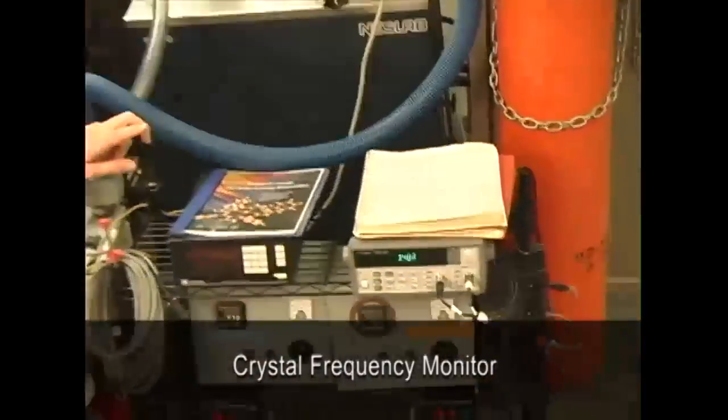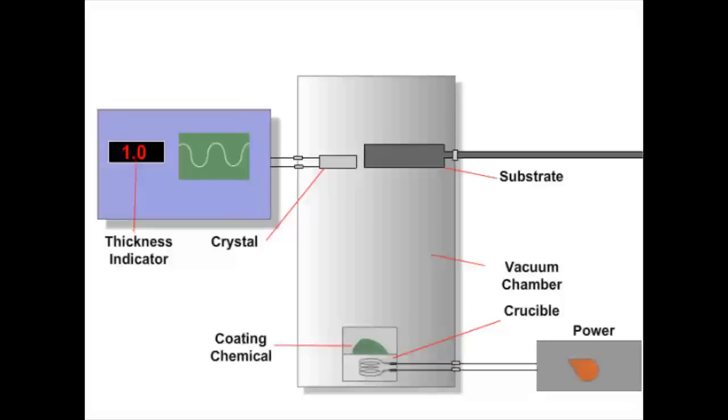We monitor the deposition with the frequency counter. There is a quartz crystal inside the chamber which is coated with organics along with the device. As the thickness of deposit increases, the frequency of the crystal changes at a known amount depending on the molecules. This allows us to control the thickness of each organic layer precisely.